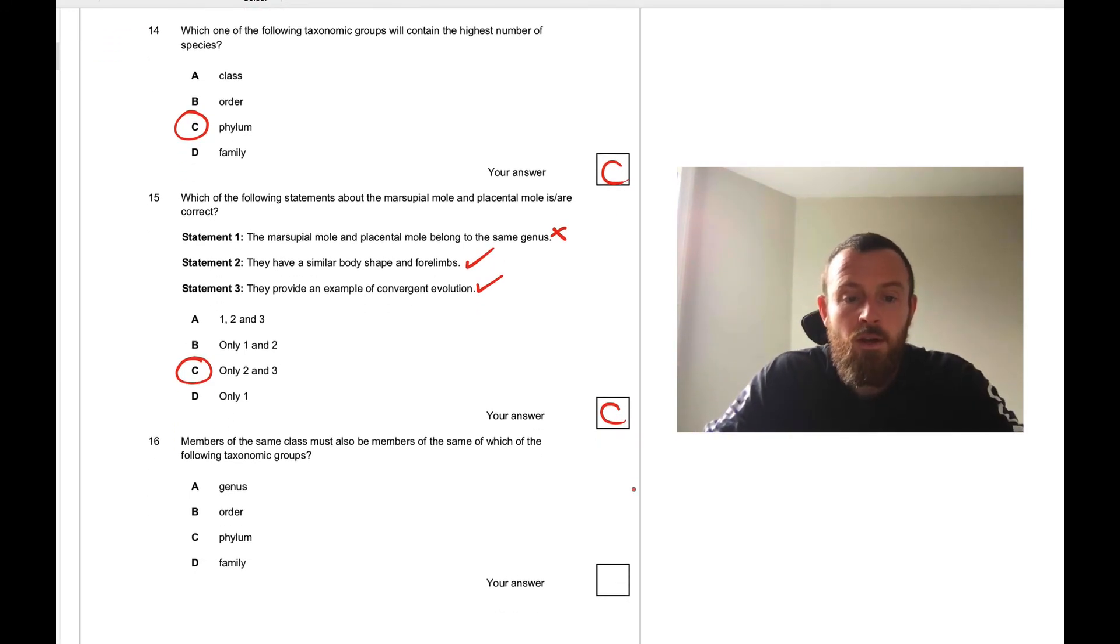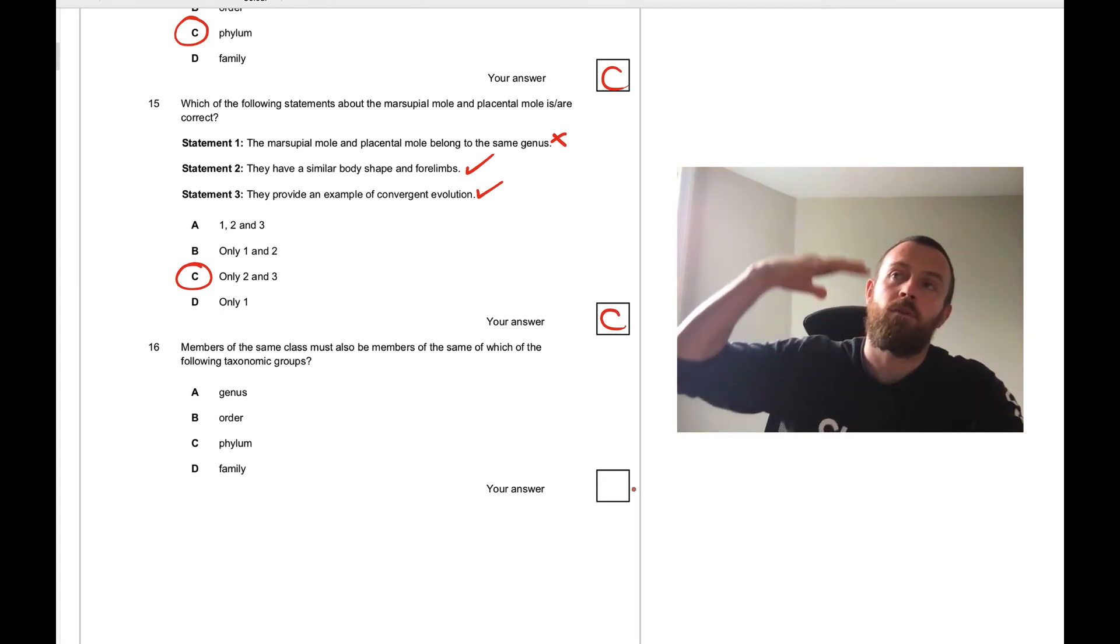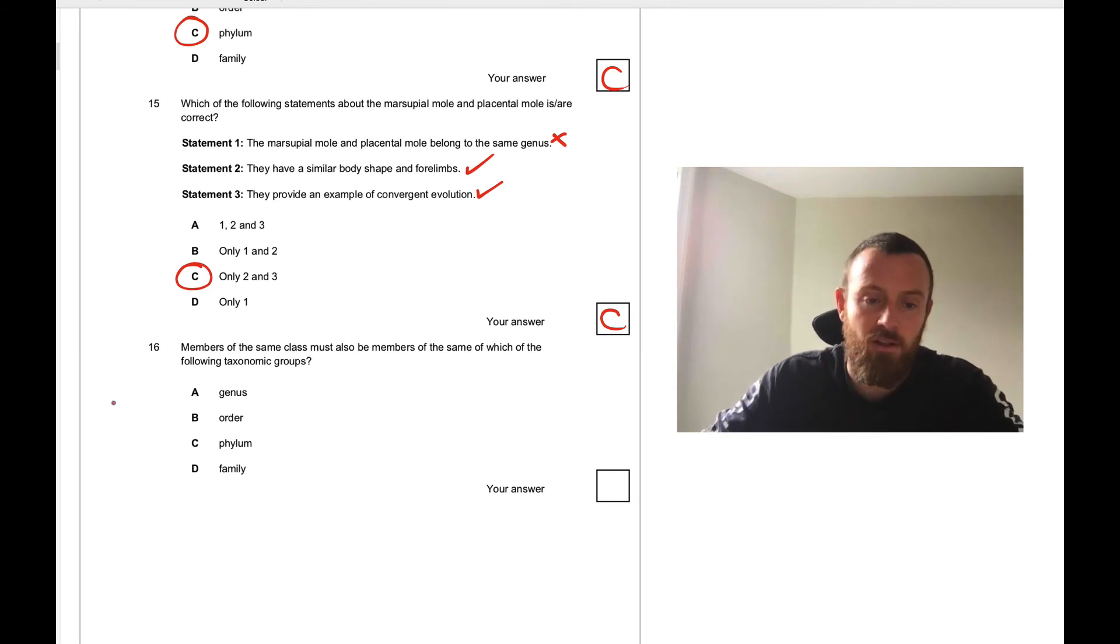Members of the same class must also be members of the same of which of the following taxonomic groups? If you're in the same class you must also be in the same taxonomic group above. Let's write the mnemonic out: Did King Philip Come Over From Great Spain? So if you are the same class here you must also be the same phylum, the same kingdom and the domain. So it's this one, phylum. 16C.